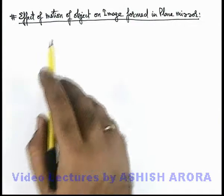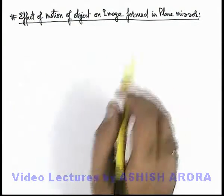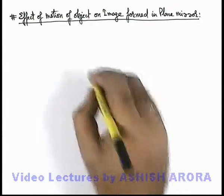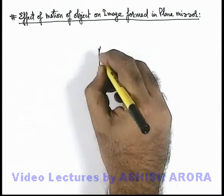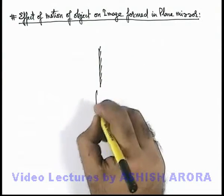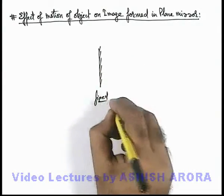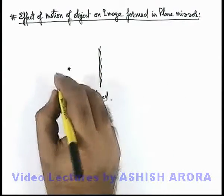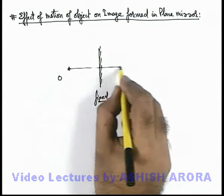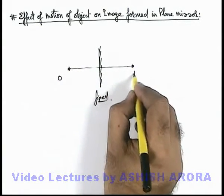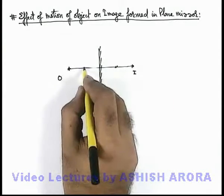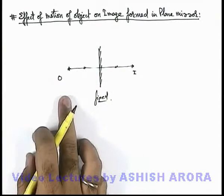Now we'll study the effect of motion of an object on the image formed in a plane mirror. Say we are given a plane mirror which is fixed, and in front of it an object is located. We know that the image will be obtained exactly behind the mirror at the same distance at which the object is placed.